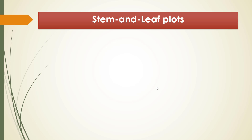Now we go to stem-and-leaf plots. Stem-and-leaf plots are similar to histograms; however, stem-and-leaf plots are easier to construct by hand, while histograms are easier to construct using technology. So it depends on your situation — whether you're using technology or working by hand. If you just want to assess normality by hand, I suggest you use stem-and-leaf plots. But if you have technology and data with decimal places, then you should go with a histogram.